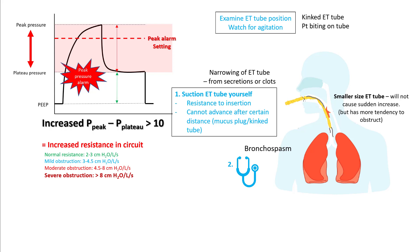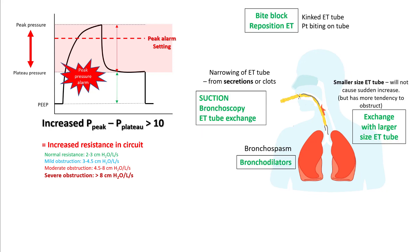Check the quality of secretions and look for mucus plugs or a kinked tube. Assess the patient for agitation and signs of biting the ET tube, and always auscultate. If the tube is kinked or being bitten, use a bite block and reposition the tube. For secretions, suction well, perform bronchoscopy, or exchange the tube if it is nearly completely blocked. If a smaller ET tube is causing problems, exchange it for a larger size over a bougie. For bronchospasm, use bronchodilators.